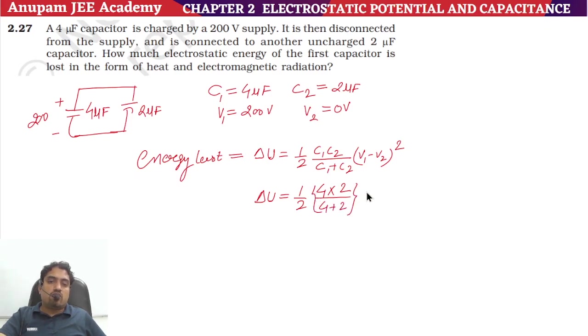But it is all in microfarad, so 10 to the power minus 6 will be multiplied. In the numerator, we also have 10 to power minus 6, which is cancelled. Ultimately, we will have 10 to power minus 6 remaining.